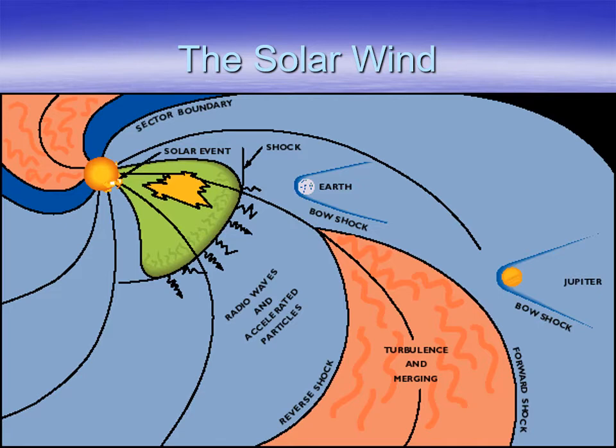Our key is the solar wind. As the sun is shining, it's also spewing out particles — protons mostly, but other kinds of particles too — spewing out across the solar system. And so the solar wind is flying across the solar system, running into all the planets.